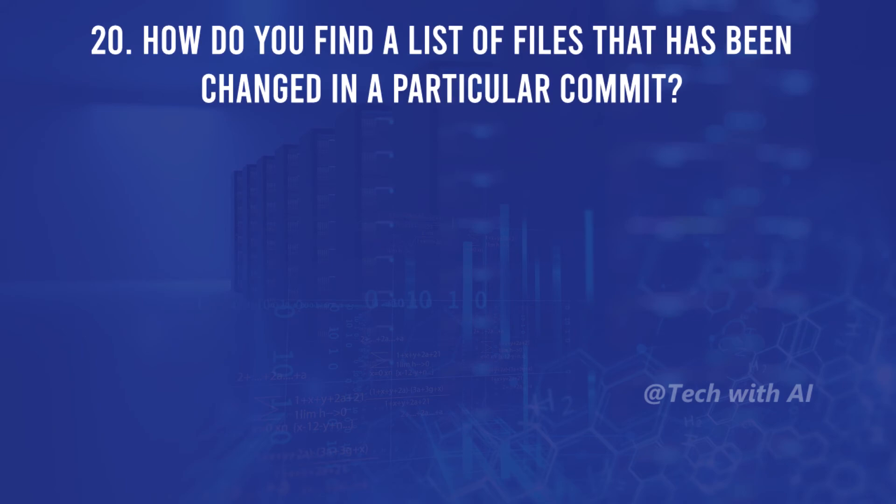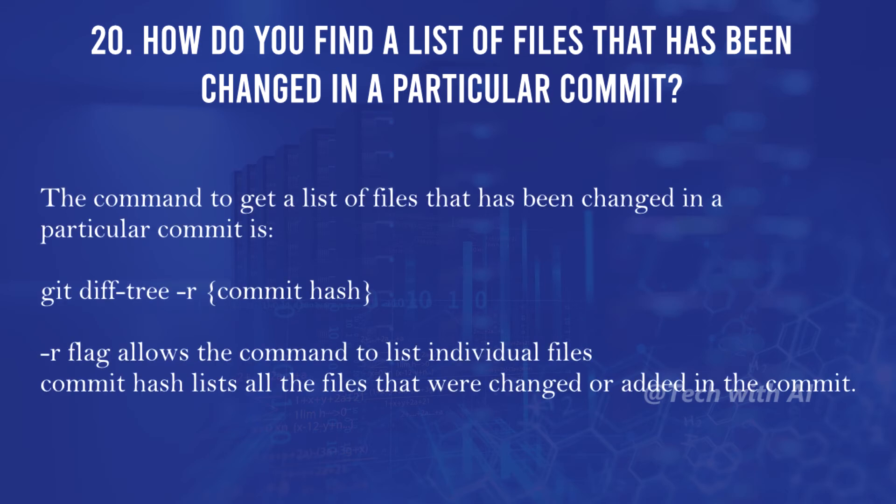How do you find a list of files that has been changed in a particular commit? The command to get a list of files changed in a particular commit is: git diff-tree -r [commit-hash]. The -r flag allows the command to list individual files, and the commit hash lists all the files that were changed or added in that commit.